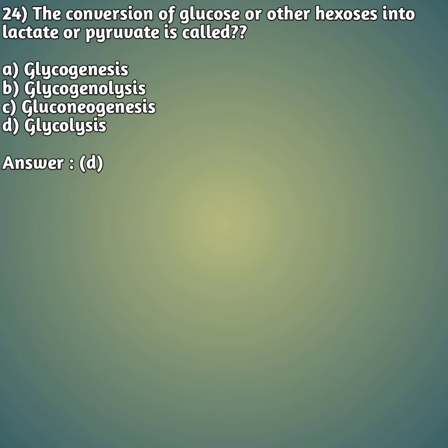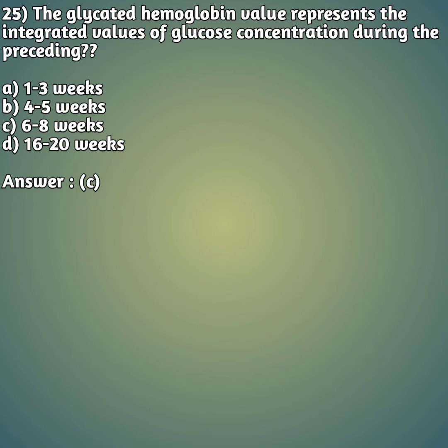Question 25: The glycated hemoglobin value represents the integrated values of glucose concentration during the preceding — option A: 1 to 3 weeks, option B: 4 to 5 weeks, option C: 6 to 8 weeks, option D: 16 to 20 weeks. The right answer is option C, 6 to 8 weeks. This is a simple question but asked in a complicated way.